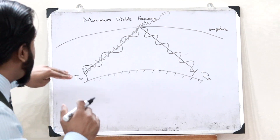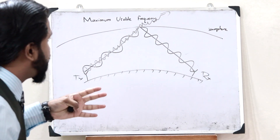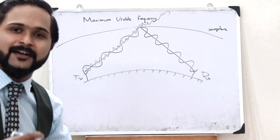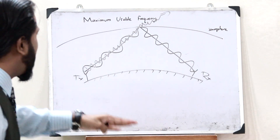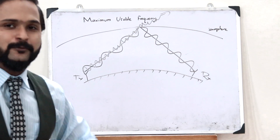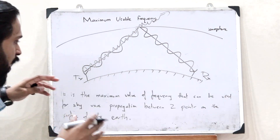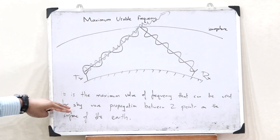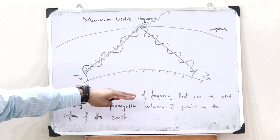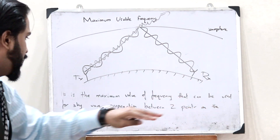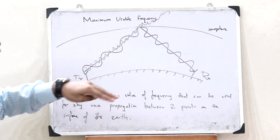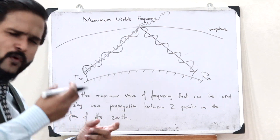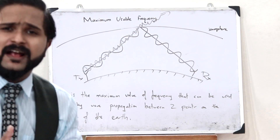Therefore, the maximum value of frequency with which the signal gets reflected at the ionosphere and can be received at the receiver is simply what we refer to as the maximum usable frequency. It is the maximum value of frequency that can be used for sky wave propagation to happen between two points on the surface of the earth.